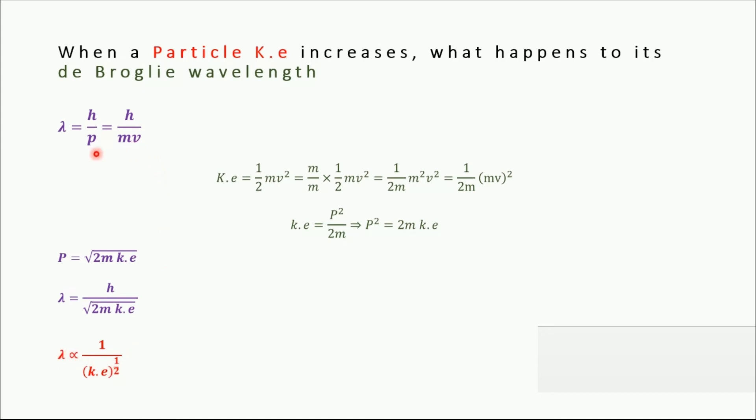This is also clear from the first equation: lambda depends on mass and velocity, which are directly related to kinetic energy. So the bigger the mass, the lower the wavelength value, and the faster the speed, the lower the value of lambda.